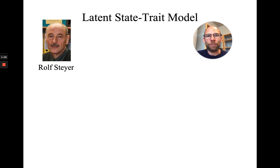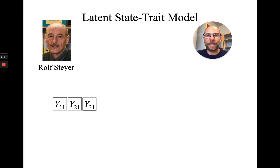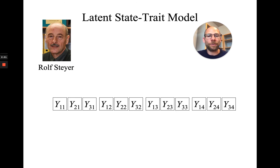So what could a prototypical latent state trait model look like? I'm going to show you that here. We have a repeated measures design, a longitudinal design with three observed variables — or three items, three parcels, or something like that — y1, y2, and y3. Those could be three different scales, for example, or three different items for measuring depression. And we measure them in this case on four measurement occasions. It's enough to have two, but of course it's always better to have more data.